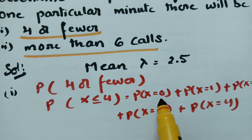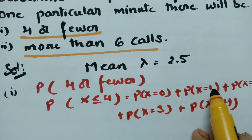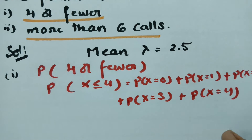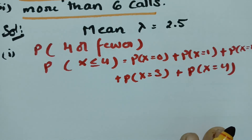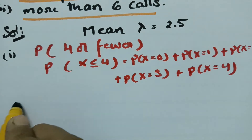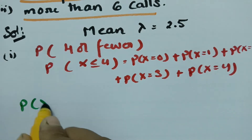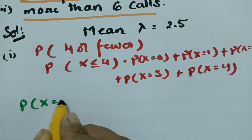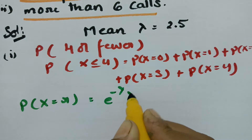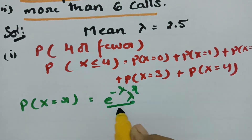Here r takes values 0, 1, 2, 3, and 4. According to the Poisson distribution, P(x=r) = e^(−λ) · λ^r / r!.